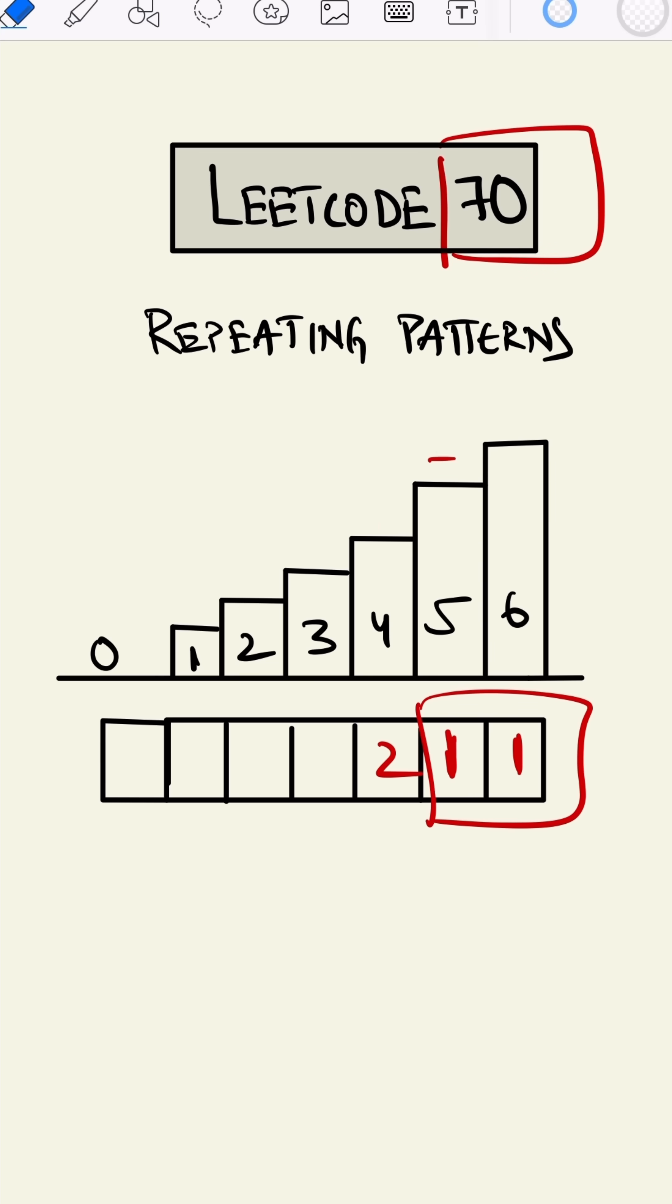Now, let's calculate from step three. From step three, we can go one step to four or two steps to five. So what we can do is the addition of four and five, which is three here.